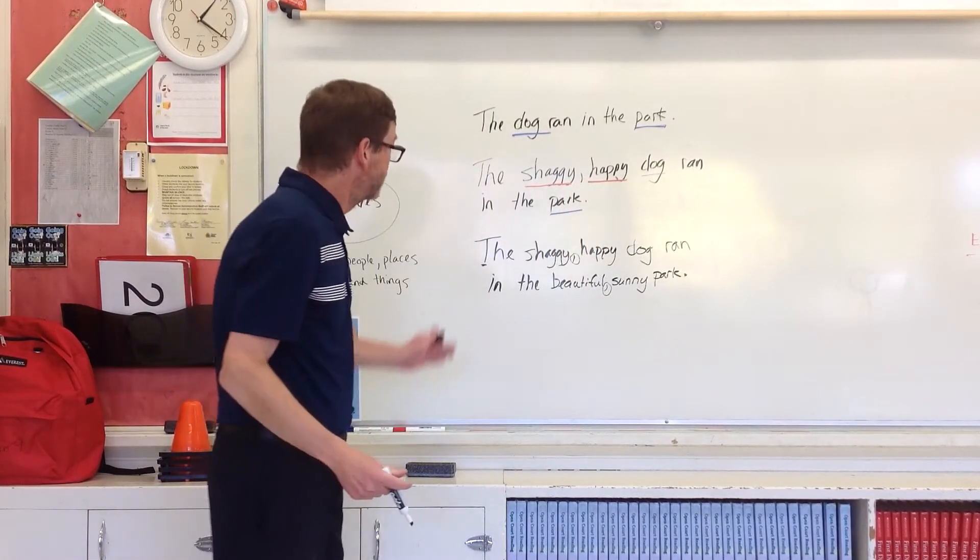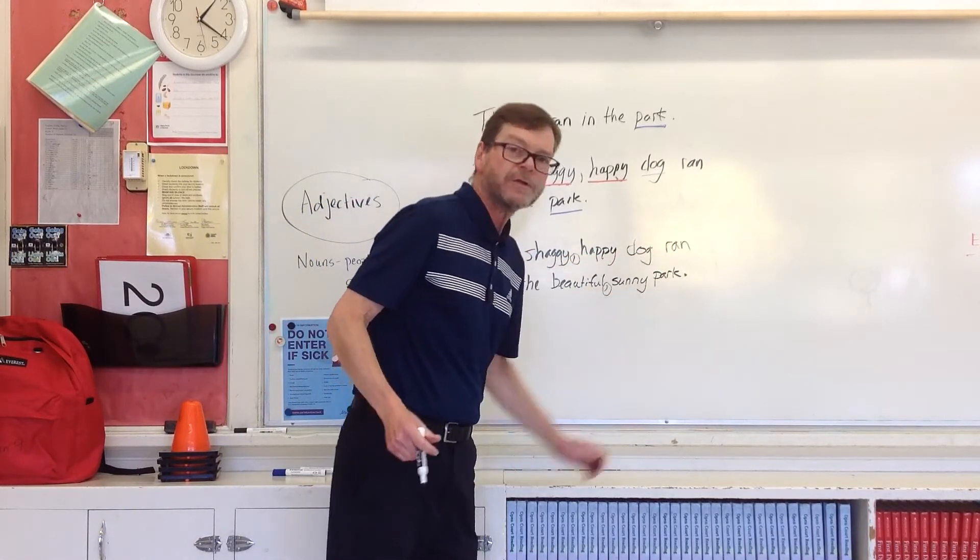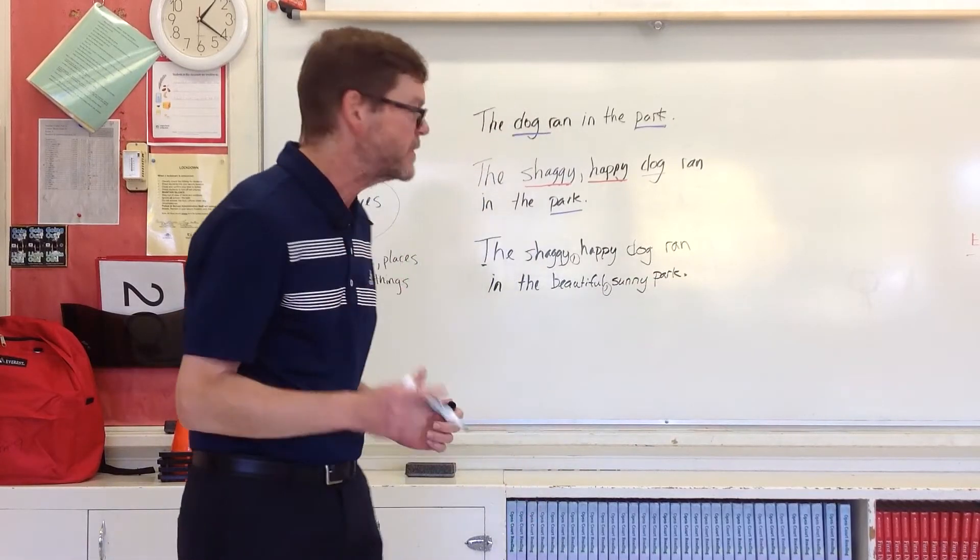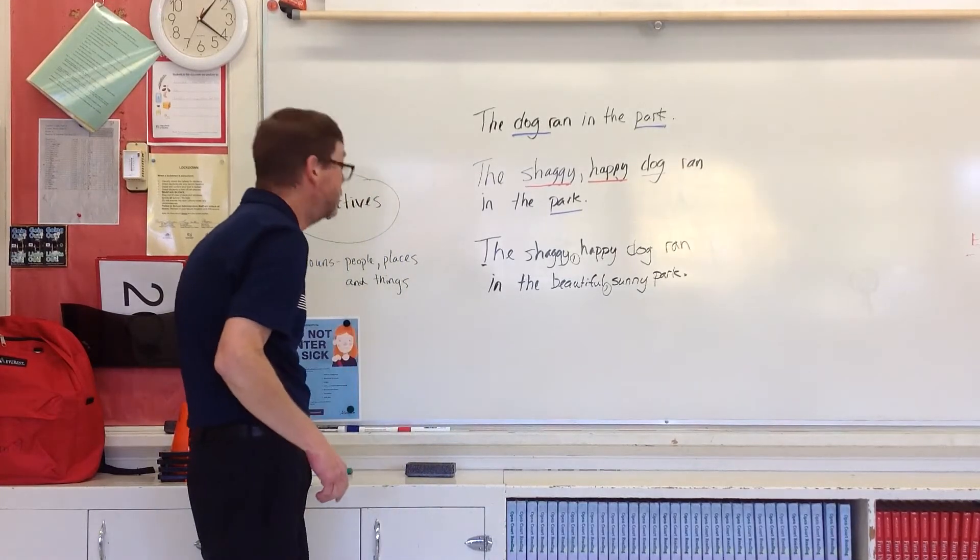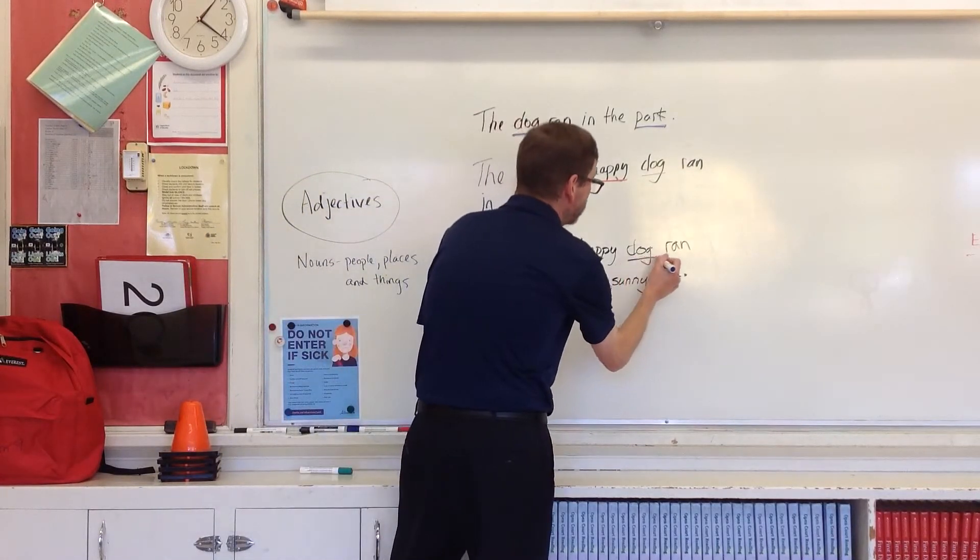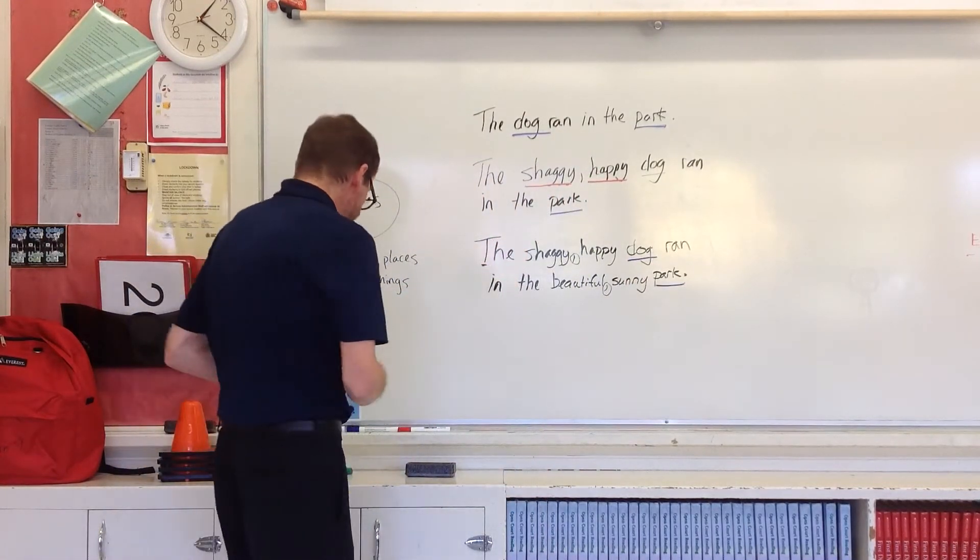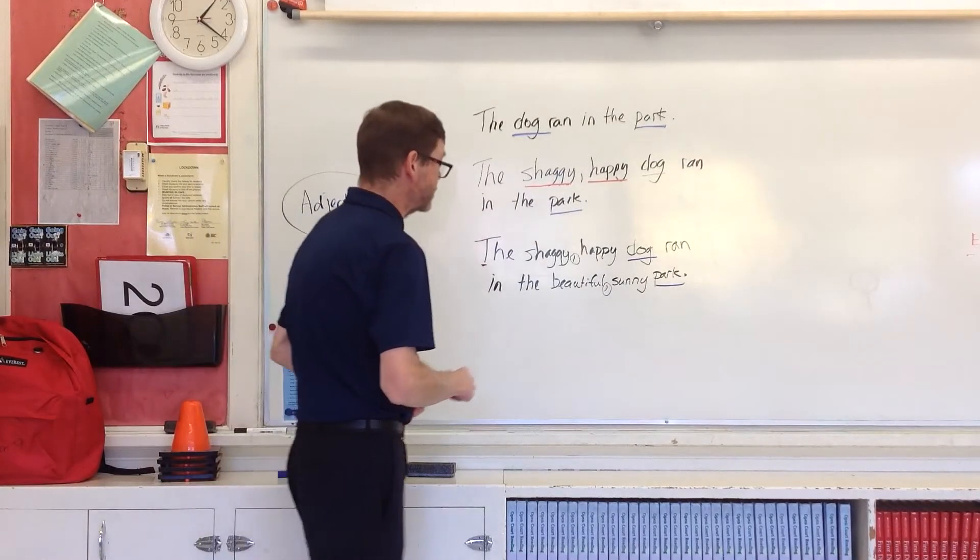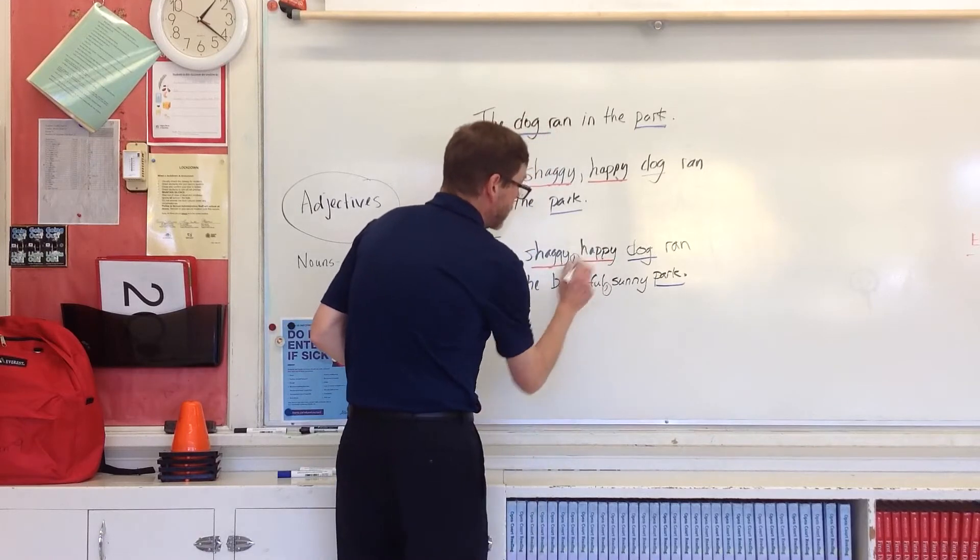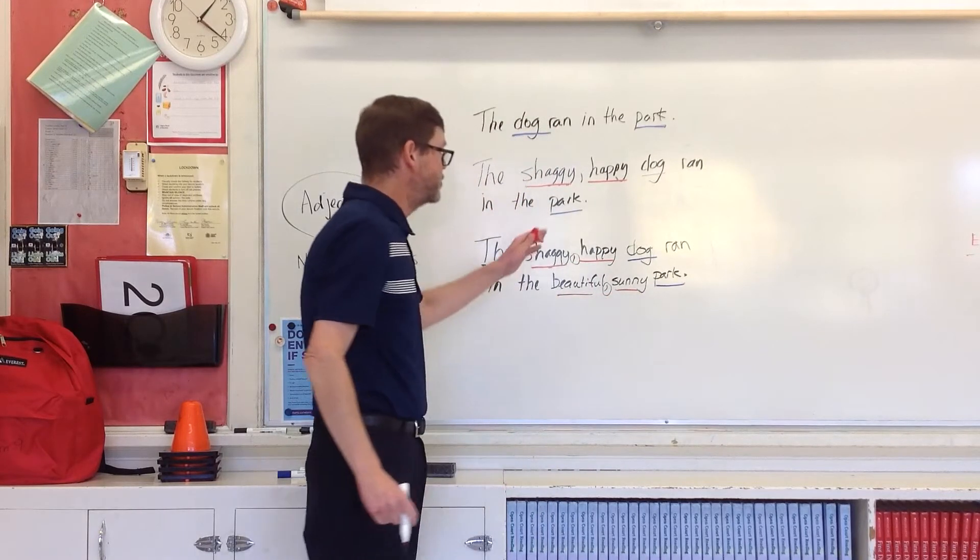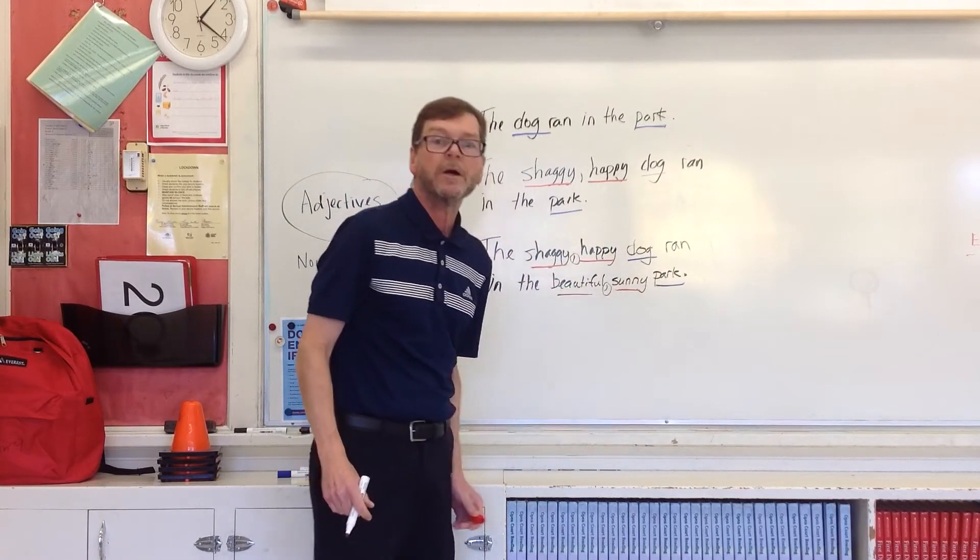It gives it pause. The shaggy, happy dog ran in the beautiful, sunny park. So, when you read it, you pause for just a little millisecond there between. Okay. So, we know our nouns, dog and park. Now, let's underline those adjectives because we've got four adjectives now. The shaggy, happy dog, beautiful, sunny park. So, shaggy and happy describe the dog. Beautiful, sunny describe the park.